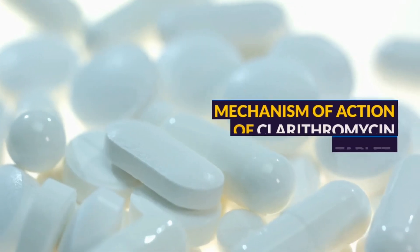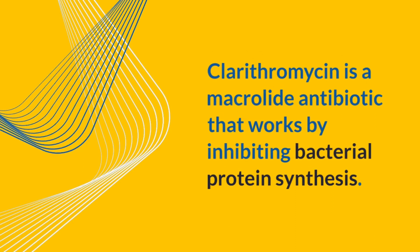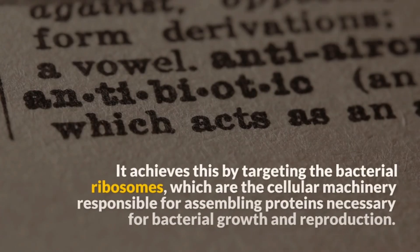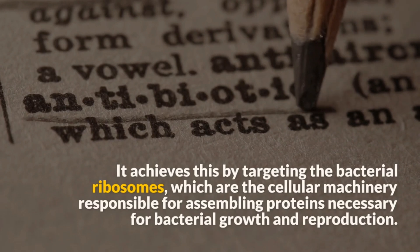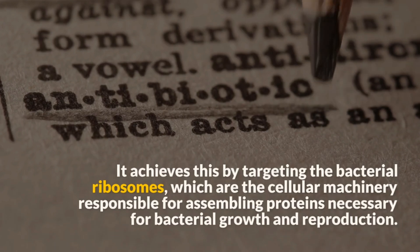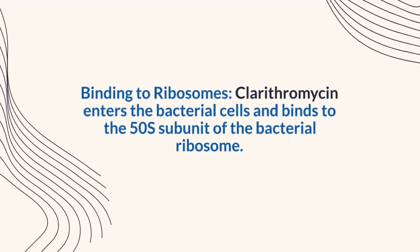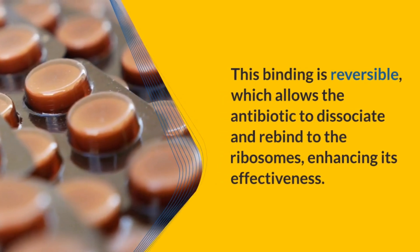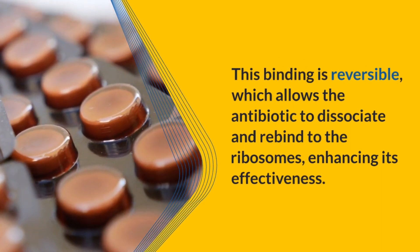Mechanism of Action of Clarithromycin Tablet. Clarithromycin is a macrolide antibiotic that works by inhibiting bacterial protein synthesis. It achieves this by targeting the bacterial ribosomes, which are the cellular machinery responsible for assembling proteins necessary for bacterial growth and reproduction. Clarithromycin enters the bacterial cells and binds to the 50S subunit of the bacterial ribosome. This binding is reversible, allowing the antibiotic to dissociate and rebind to the ribosomes, enhancing its effectiveness.